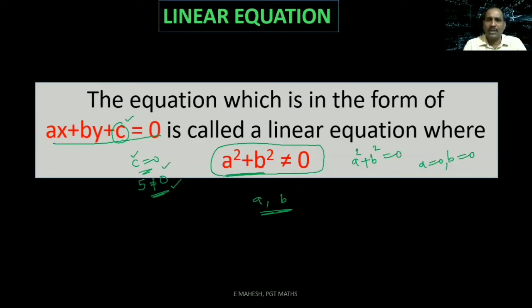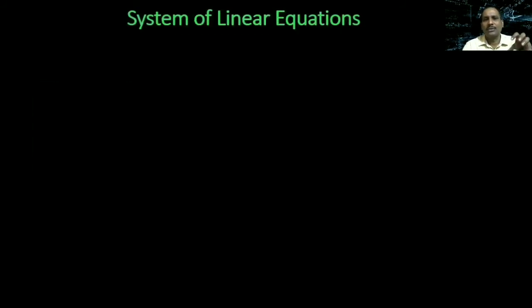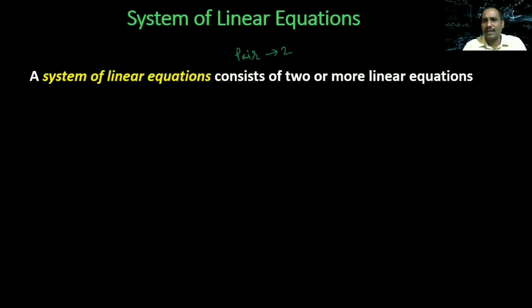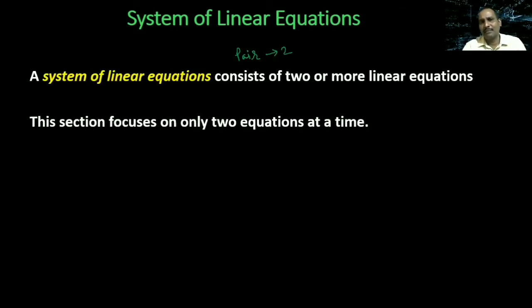When you know about the linear equation, we talk about the system of linear equations. What is the system of linear equations? A system is when you have two or more equations together. Here in this particular chapter, we are going to discuss only two linear equations at a time — that means it is a pair of linear equations. So pair means two, and we focus only on two equations at a time in this chapter.